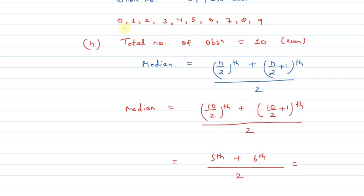So, 5th observation - what is it? 1, 2, 3, 4, 5, 6. So, 5th observation is 4, and 6th observation is 5.